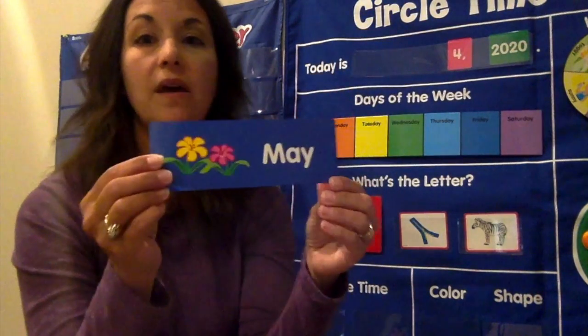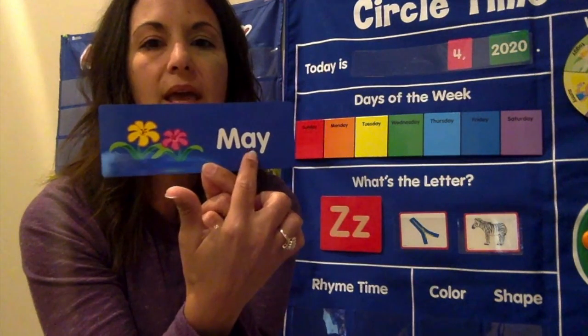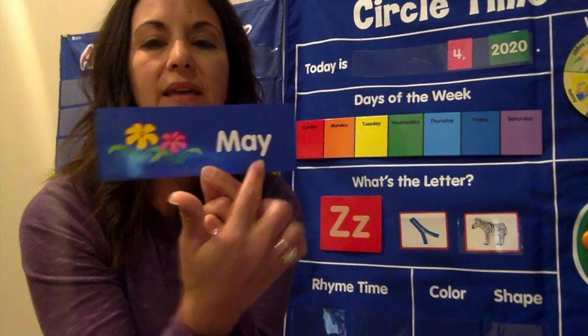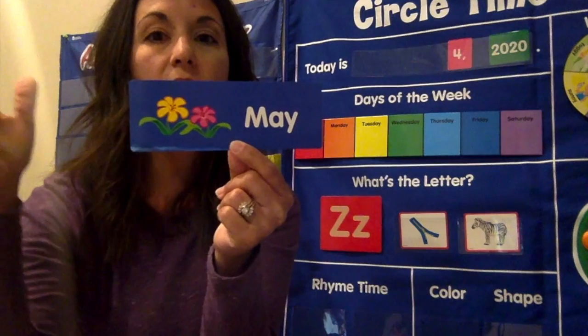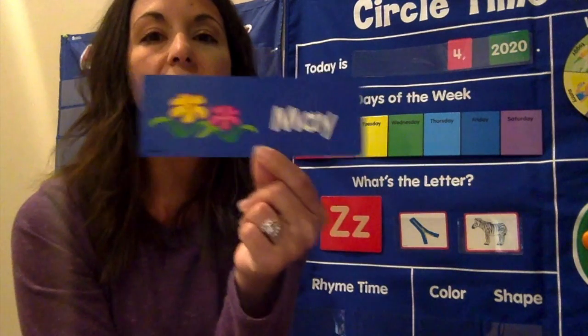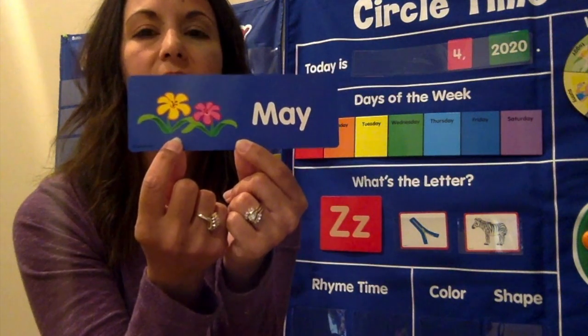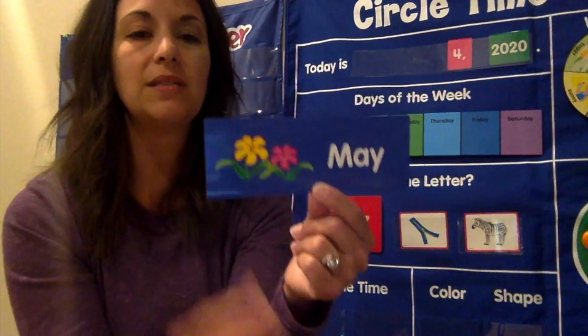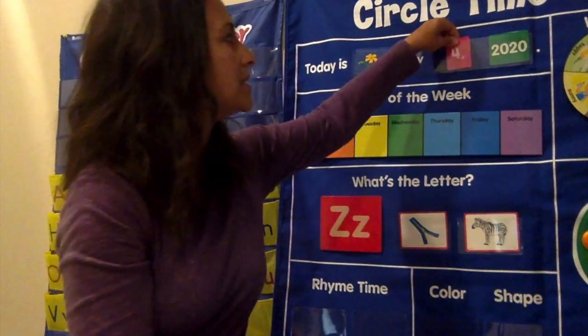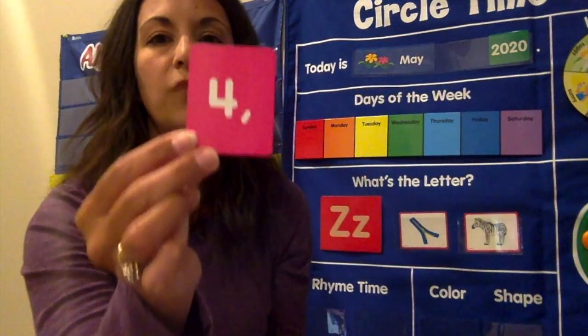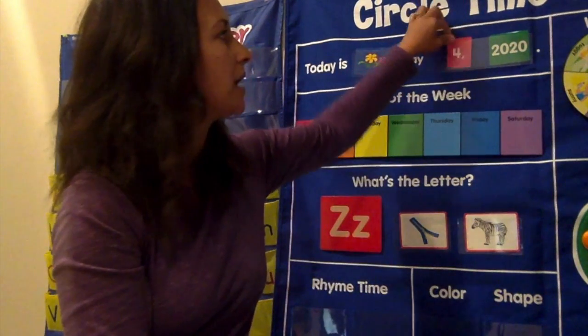We are in the month of May. Remember we have a new month, M-A-Y May, and we have our flowers here on our card because last month we had all the rain with our umbrella and all the flowers grew. So in the month of May we have all the pretty blooms and flowers outside and we are still in springtime. Today is May 4th, the number four, May 4th 2020.